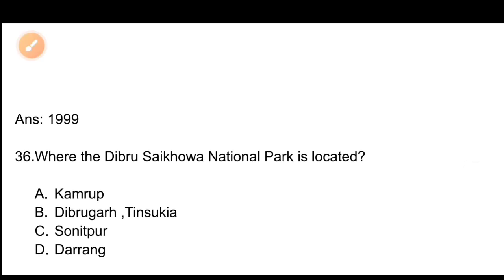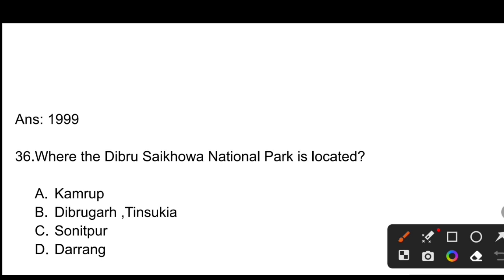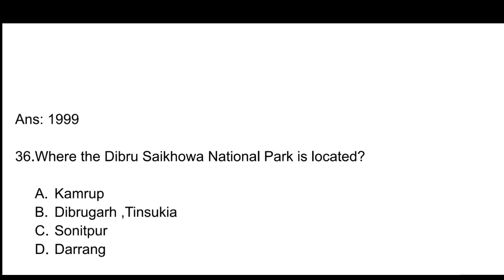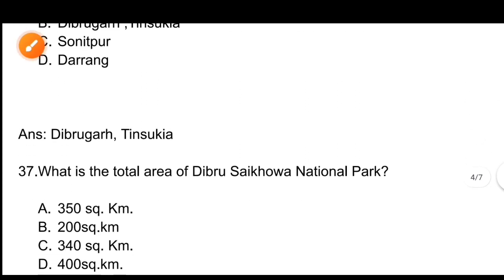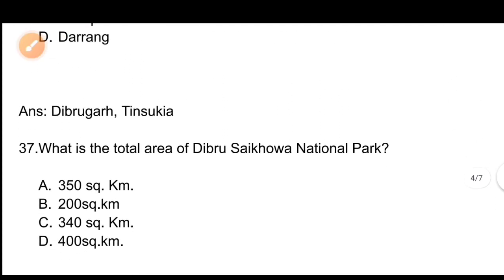Question number 36: Where is Debru Saikowa National Park located? Options: A) Kamrup, B) Dibrugarh and Tinsukia, C) Sonitpur, D) Darrang. The correct answer is Dibrugarh and Tinsukia. Debru Saikowa National Park is located in Dibrugarh and Tinsukia.